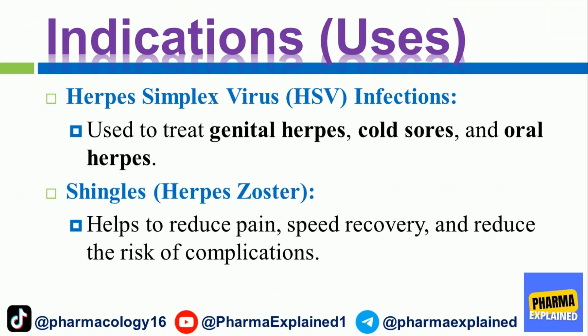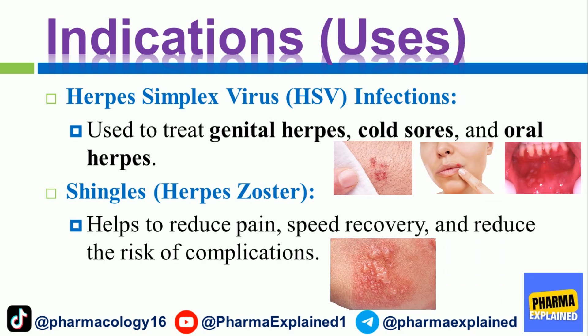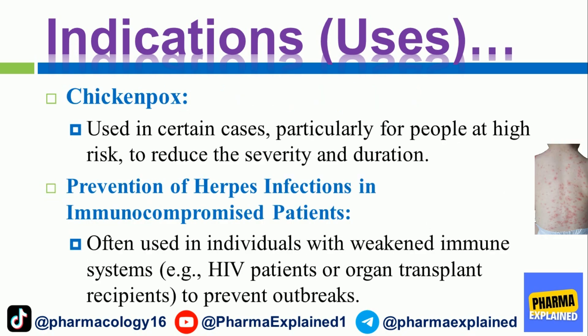Indications and uses: For herpes simplex virus (HSV) infections, it is used to treat genital herpes, cold sores, and oral herpes. For shingles (herpes zoster), it helps reduce pain, speed recovery, and reduce the risk of complications. For chicken pox, it is used in certain cases, particularly for people at high risk, to reduce severity and duration. It is also used for prevention of herpes infections in immunocompromised patients, such as HIV patients or organ transplant recipients, to prevent outbreaks.